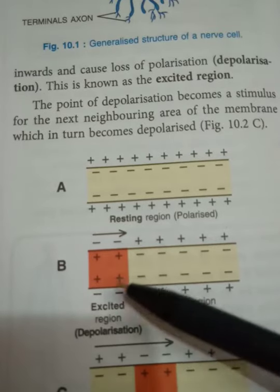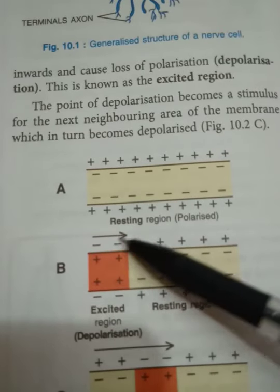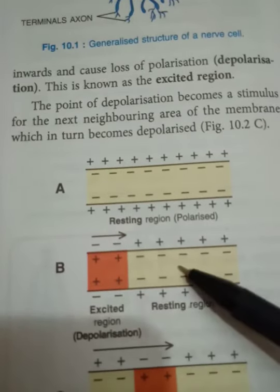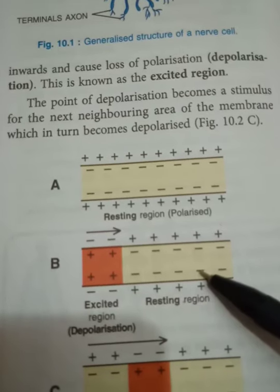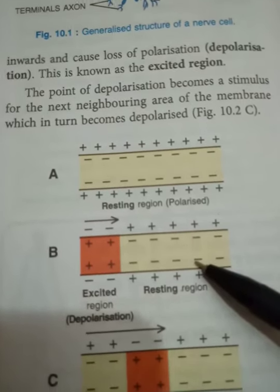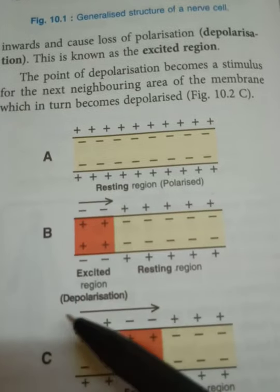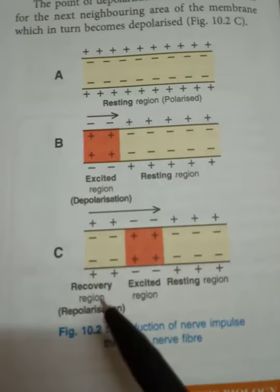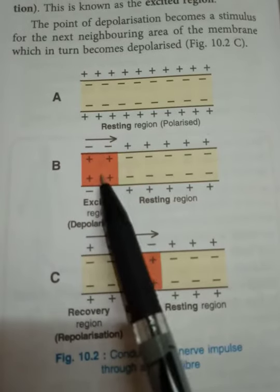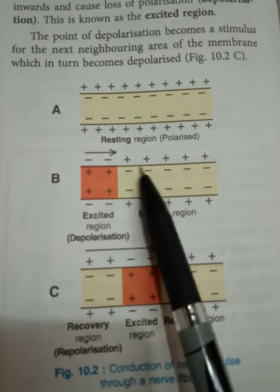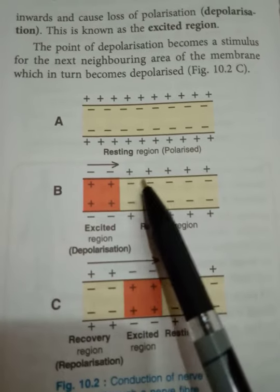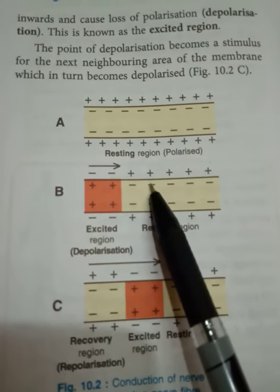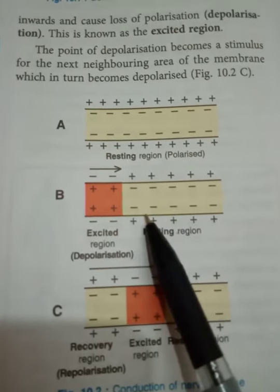The point of depolarization then becomes a stimulus for the next neighboring area of the membrane, which in turn becomes depolarized. This wave continues along the axon, with sodium ions entering inside as membrane permeability increases at each successive point, sweeping the impulse along the axon.